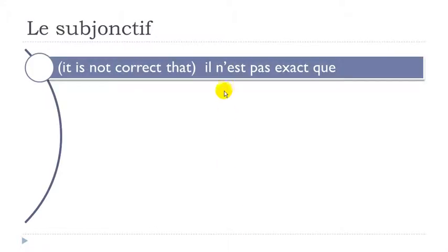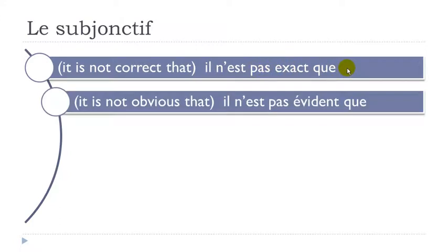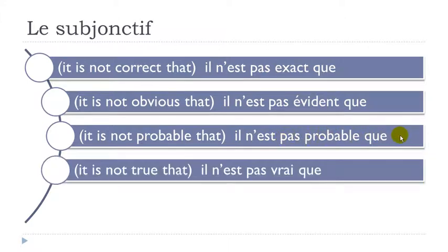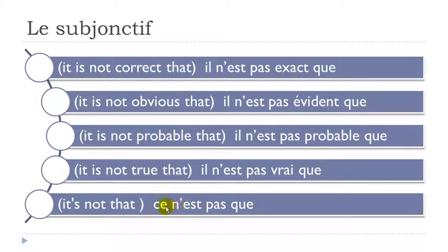Continuing: Il n'est pas exact que. Il n'est pas évident que. Il n'est pas probable que. Il n'est pas vrai que. Ce n'est pas que. All of these should be followed by le subjonctif.